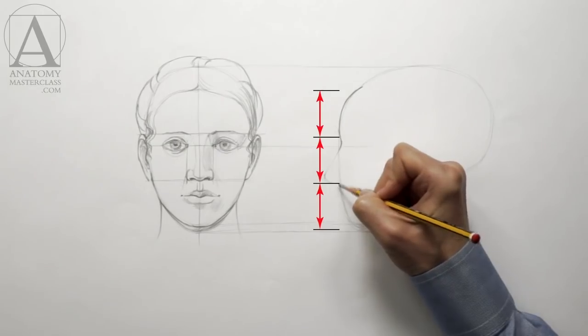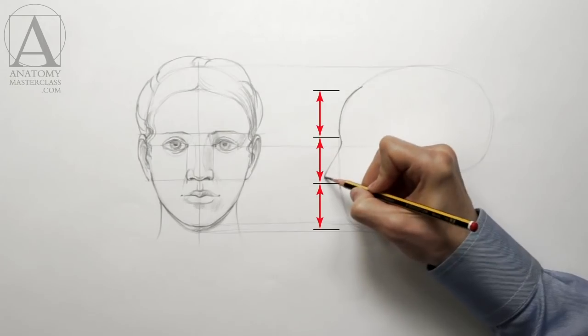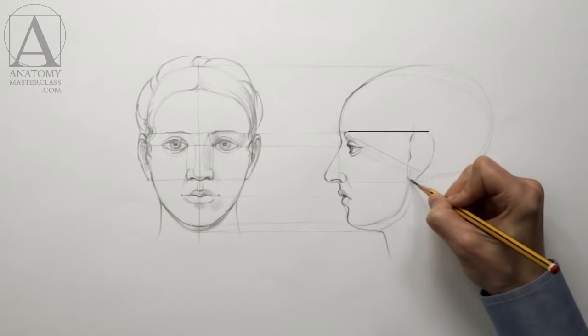The distance between the hair line, the eyebrow line, the base of the nose, and the bottom edge of the chin are equal. The upper edge of the ear lies on the same level as the eyebrow, while the lower edge is level with the base of the nose.